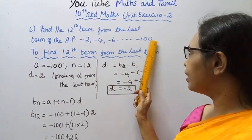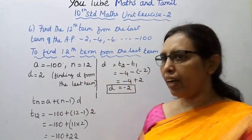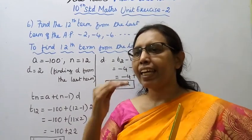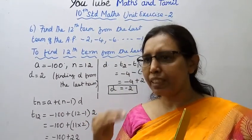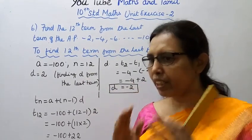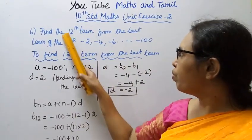To find the nth term of an AP, the formula is tn = a + (n-1)d. But here we need the 12th term from the last term, not from the beginning.